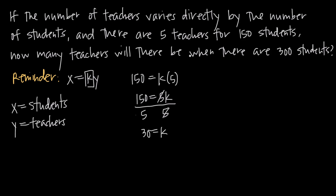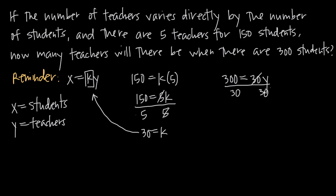The question asks how many teachers there will be when there are 300 students. We plug in 300 for x and 30 for k: 300 = 30y. Dividing both sides by 30, the 30s cancel, and we get 300 ÷ 30 = 10, so y = 10. There will be 10 teachers when there are 300 students.